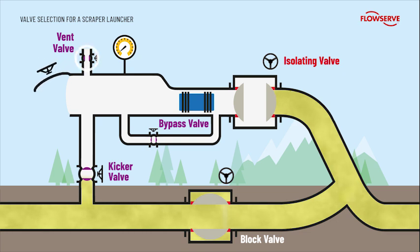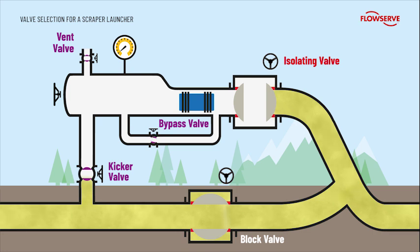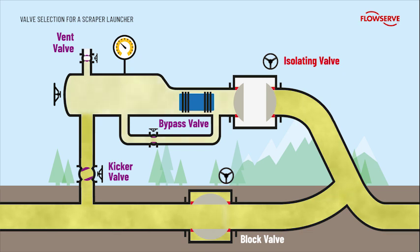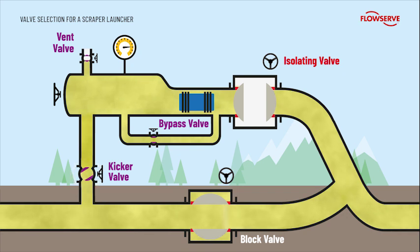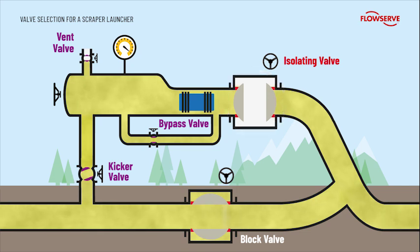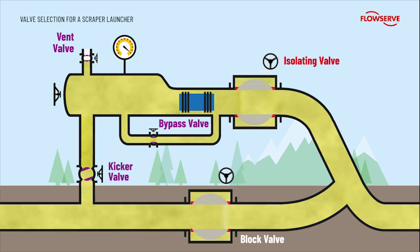The vent valve and chamber door are closed and the bypass valve is opened. The kicker valve is now slowly opened to pressurise the chamber and balance the pressure either side of the isolating valve. The kicker valve is rarely fully opened, as throttling of the gas flow provides control over the speed of the scraper when it moves into the pipeline. Throttling would damage a soft-seated ball valve, hence a plug valve is used. The isolating valve is generally a full-bore, soft-seated ball valve to allow the scraper to pass through, and with the pressure now balanced either side, it can be safely opened without damaging the seats.